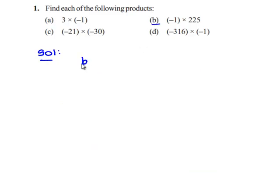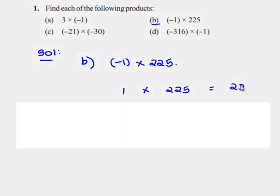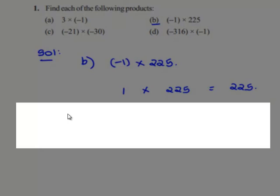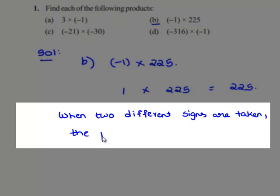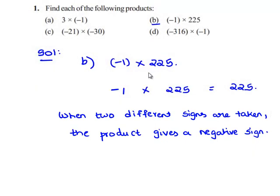We'll see the second part. The question is negative 1 into 225. First, regardless of their signs, we take the product of the values, that is 1 into 225, which equals 225. When two different signs are taken, the product gives a negative sign. The sign of 1 is negative and the sign of 225 is positive. Therefore, negative 1 into positive 225 gives negative 225.